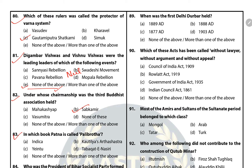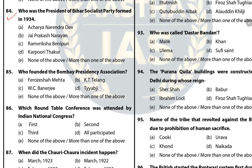Question 83: In which book is Patna called Palibrotha? The answer is E — Indica. Question 84: Who was the President of Bihar Socialist Party when it was formed in 1934? The answer is A — Acharya Narendra Dev. In 1934, Bihar Socialist Party was established in Patna's Anjuman Islamia Hall. It was headed by Acharya Narendra Dev and Secretary Jayaprakash Narayan.